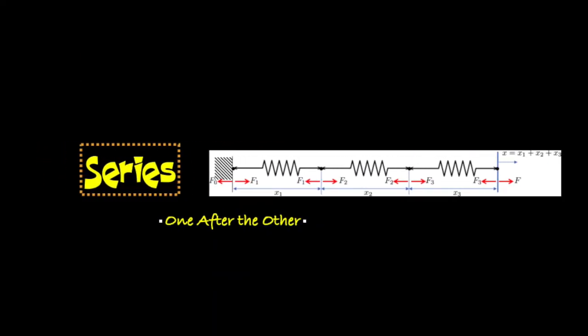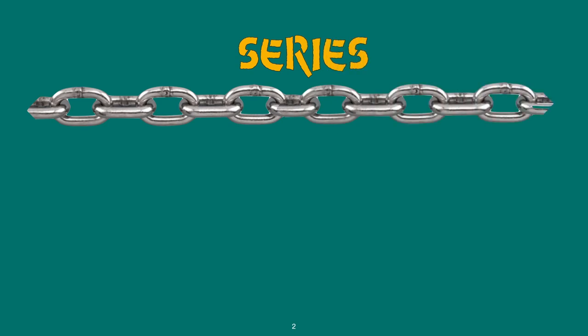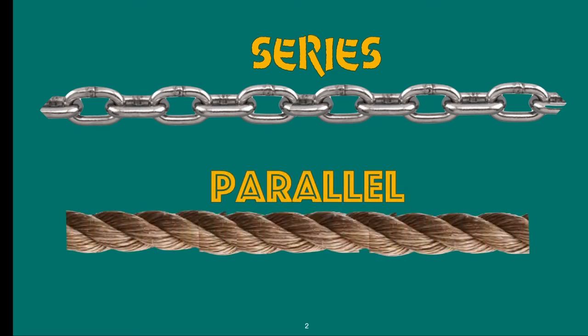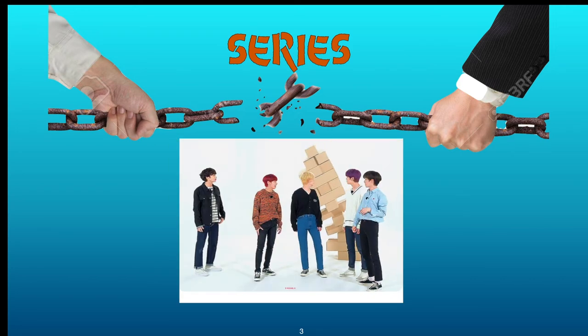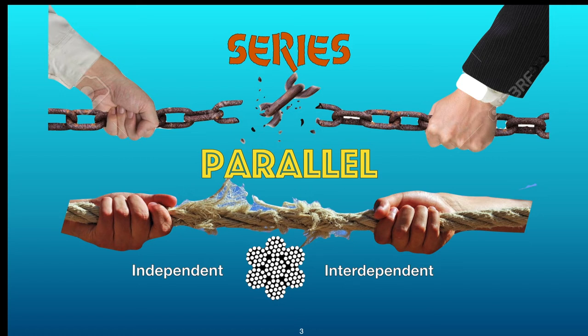As tensegrity is the model for the structure of organisms, all compression elements of an organism must be compressed equally and in parallel. In physics, series refers to events occurring one after another, like a link chain. Parallel is when events occur simultaneously toward the same goal, like fibers of a hemp rope — entwined with each other. A weak link in a chain destroys the whole chain; in parallel, elements can work together but are not dependent on each other, so if one fails the others still do their job. They are simultaneously independent and interdependent.